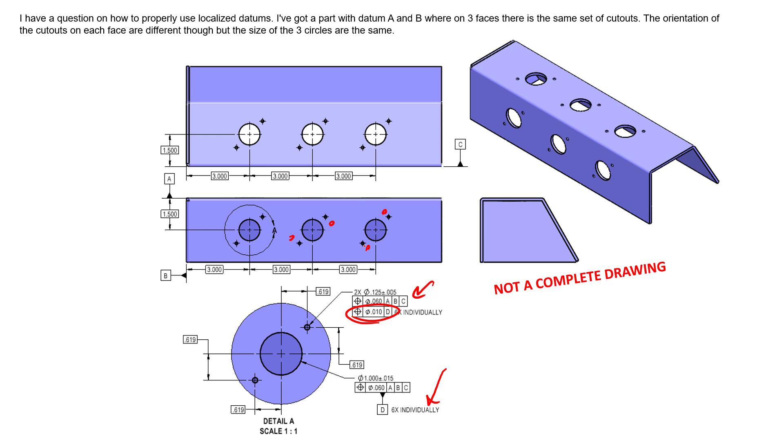Hopefully this all kind of sheds some light on how to control the repetitive pattern of features with respect to a more central datum. Again, repeating that using the detail and six times individually. So hopefully that answers your question. And thanks for submitting.